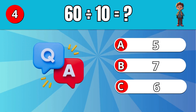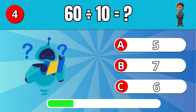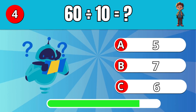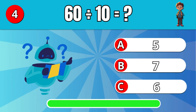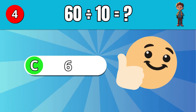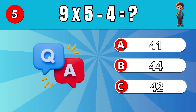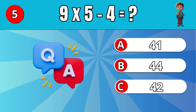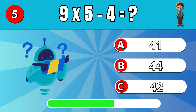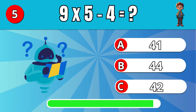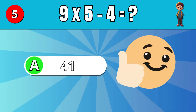What is 60 divided by 10? C: 6. What is 9 times 5 minus 4? A: 41.